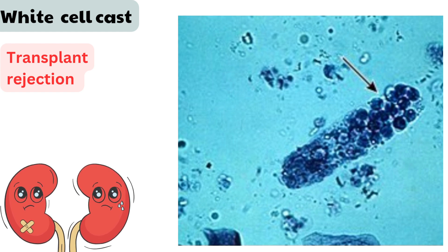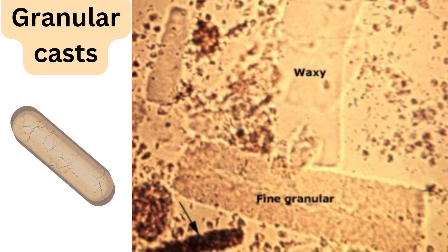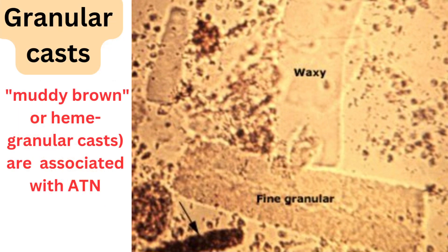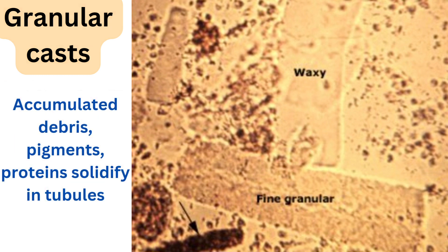Third: granular, muddy brown casts. These are associated with acute tubular necrosis, which is characterized by damage to the kidney tubules and can be caused by ischemia, toxins, or severe infections. The granular appearance is due to the breakdown of cellular debris within the tubules.